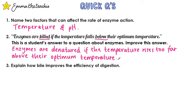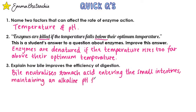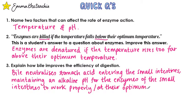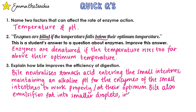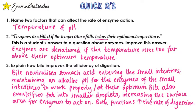Question three: explain how bile improves the efficiency of digestion. Bile neutralises stomach acid entering the small intestine, maintaining an alkaline pH for the enzymes of the small intestine to work at their optimum. Bile also emulsifies fats into smaller droplets, increasing their surface area for enzymes to act on. Both functions increase the rate of digestion. In the next video you will learn the name of the enzyme that actually breaks down fats, which you could also include in your answer.